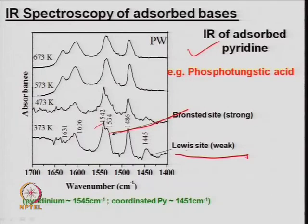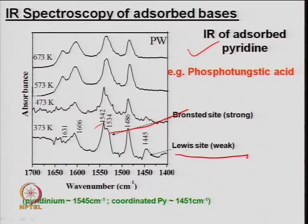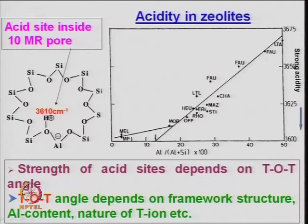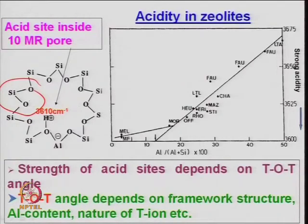IR method is again an important tool to characterize a zeolite for its acidity — concentration as well as strength of acid sites. The acid sites inside a zeolite depend on orientation — at wave number 3610 the proton has been shown — and the angle is also important: how the framework has been formed and how silicon and aluminum are connected provides acidity inside a zeolite pore.